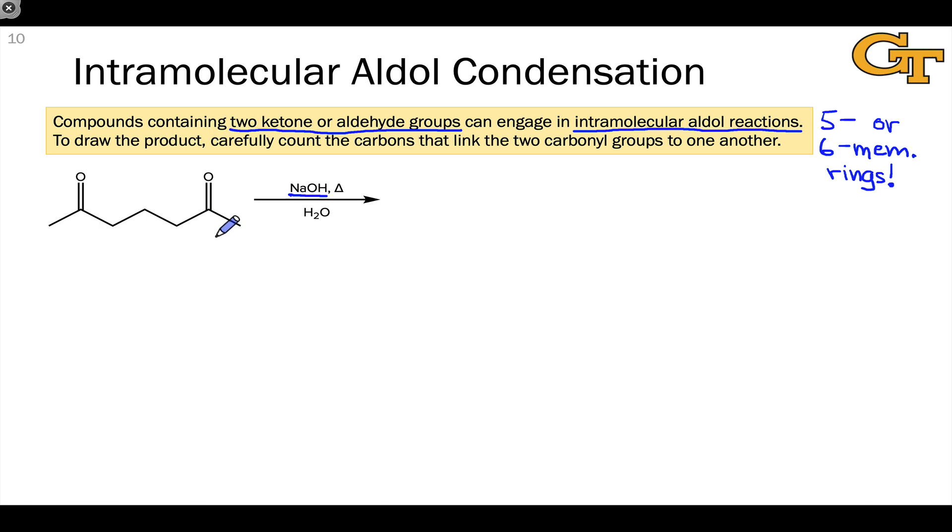Take this substrate for example. It looks like we have a fairly large number of possibilities here. We've got two electrophilic carbonyl carbons and we've got four nucleophilic alpha carbons. Now this particular substrate is symmetric and so that whittles down the possibilities a little bit but even so we can still think about these two alpha carbons engaging with the other carbonyl carbon and that's going to give rise to at least two unique possible products.